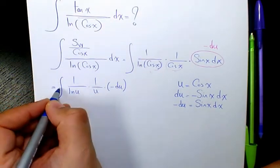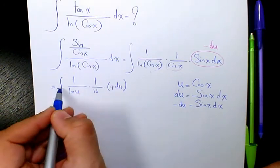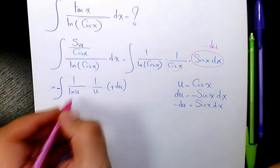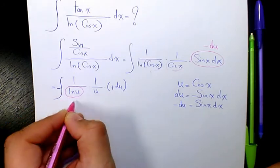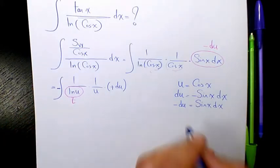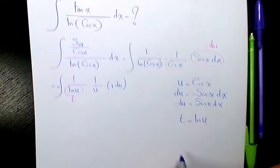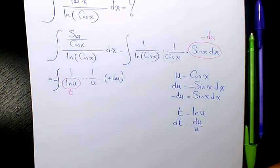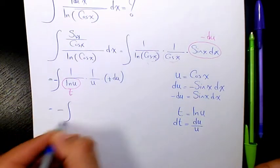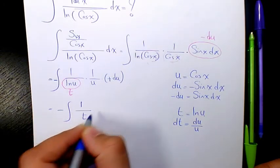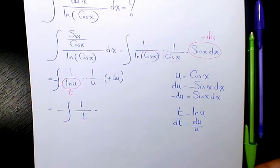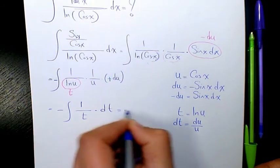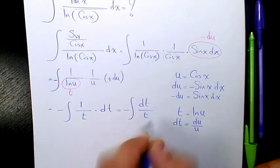I'm gonna write the negative out front and make it positive inside. I can use another substitution method — let t equal ln(u), so dt equals du over u. So I'm gonna have negative 1 over t times du over u, which is dt, giving me negative dt over t.